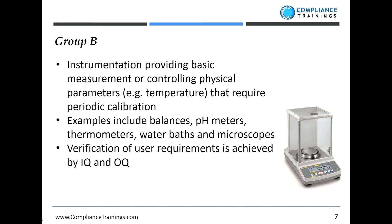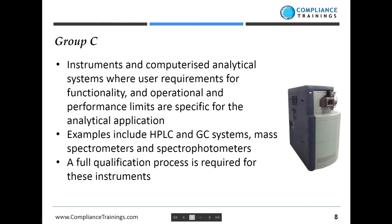Generally we recalibrate group B instruments regularly — pH meters are often calibrated at the time of use, and balances receive an annual calibration supported by daily check weights to make sure calibration hasn't drifted between times. Group C is the most complex type of instrumentation. These are instruments that generally have computerized data systems associated with them, including chromatographic systems, mass spectrometers, and spectrophotometers, and for these instruments we require a full qualification approach.